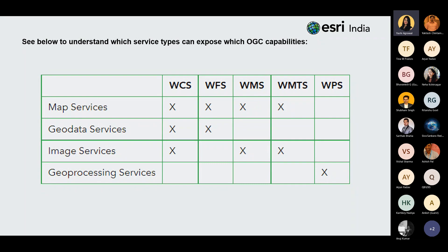To understand which type of service can expose which capabilities, there is a table. Map services are supported by WCS, WFS, WMS, and WMTS, while not supported for WPS. WPS only supports geoprocessing services. Moving on, I'll show a demo of how to publish vector and raster data. I'll change my screen.